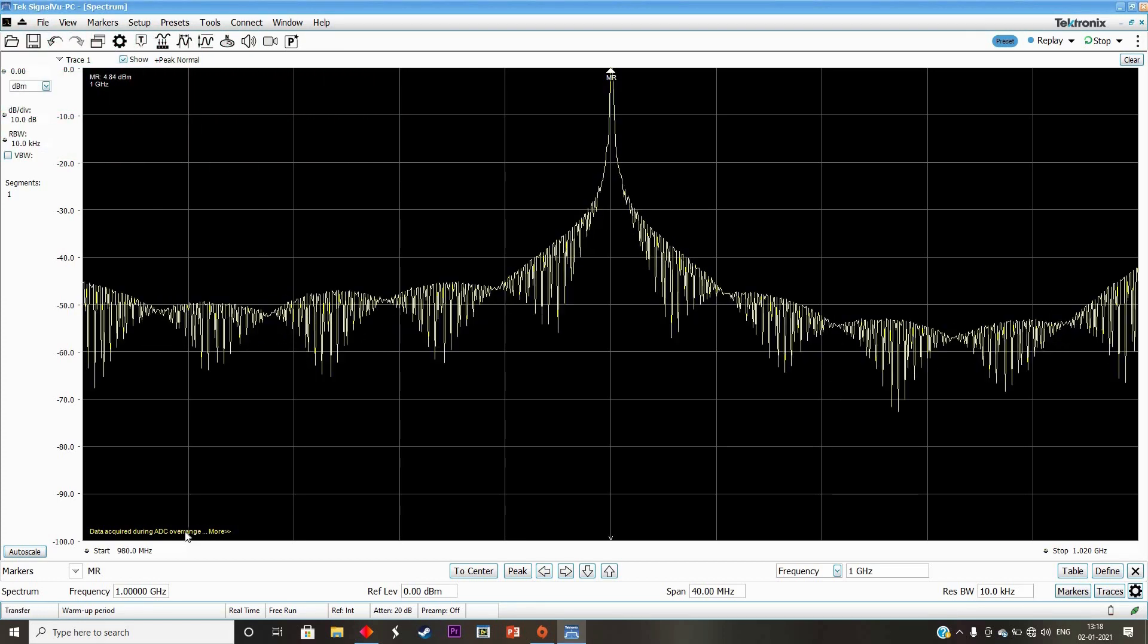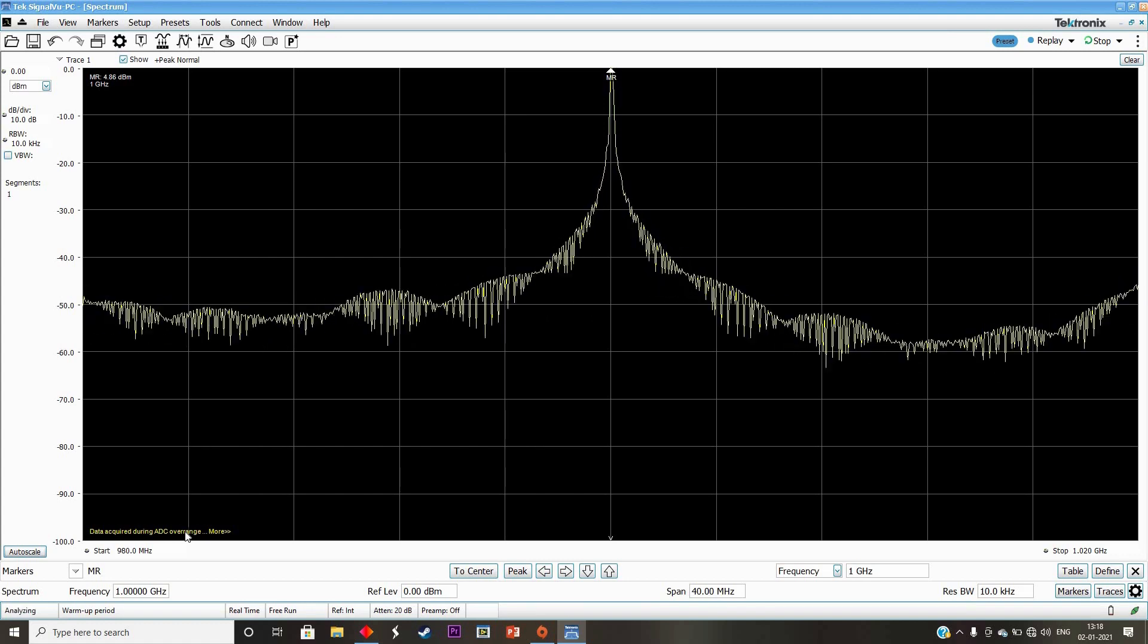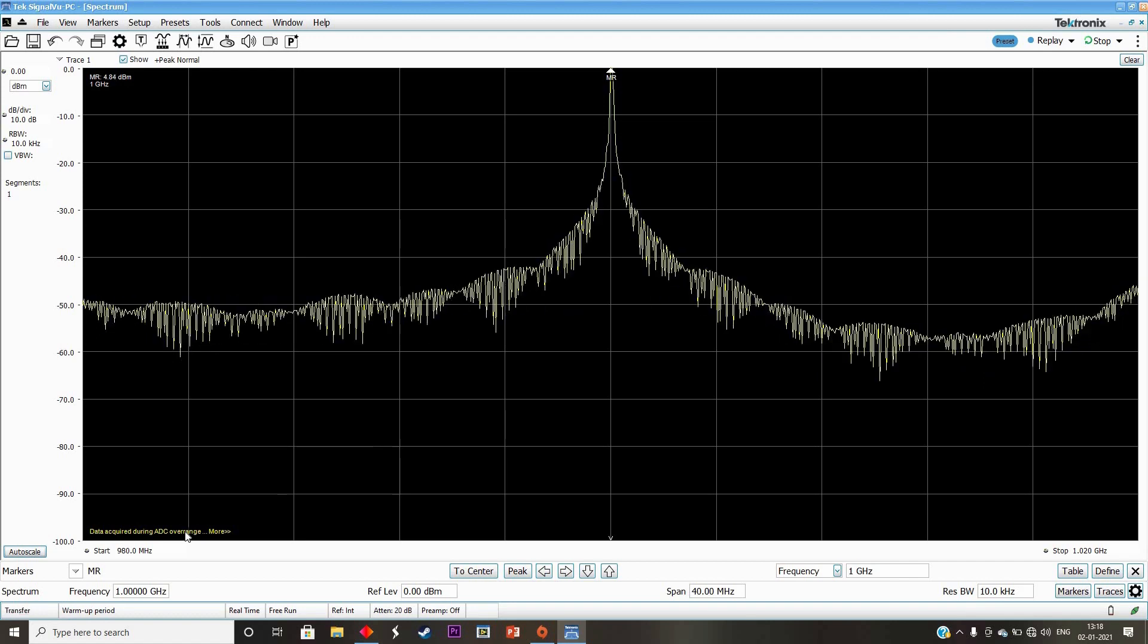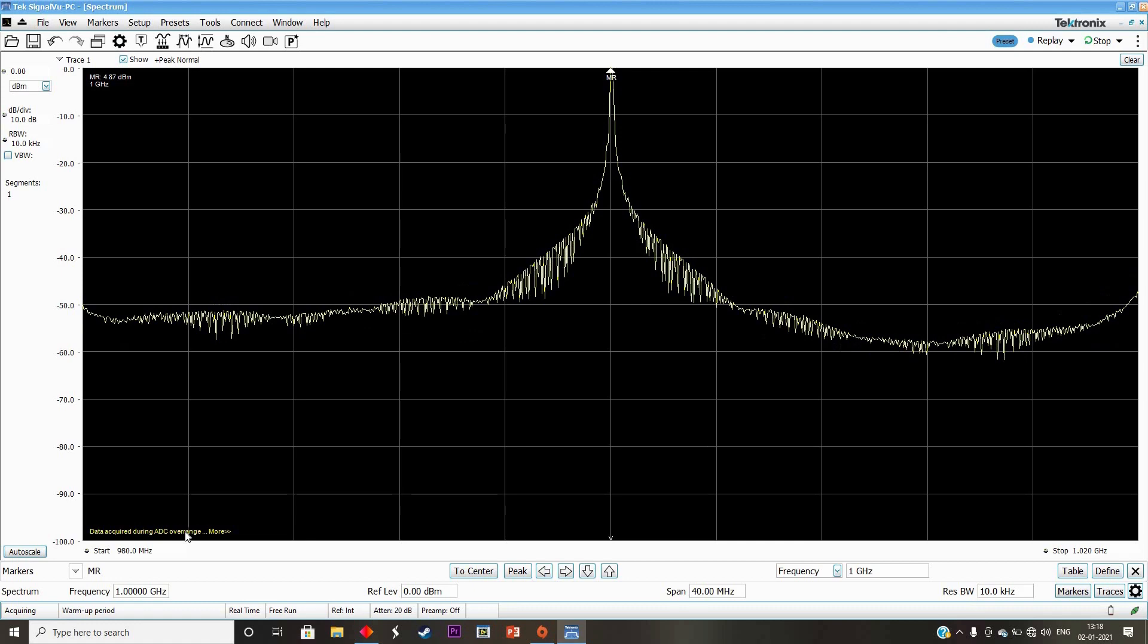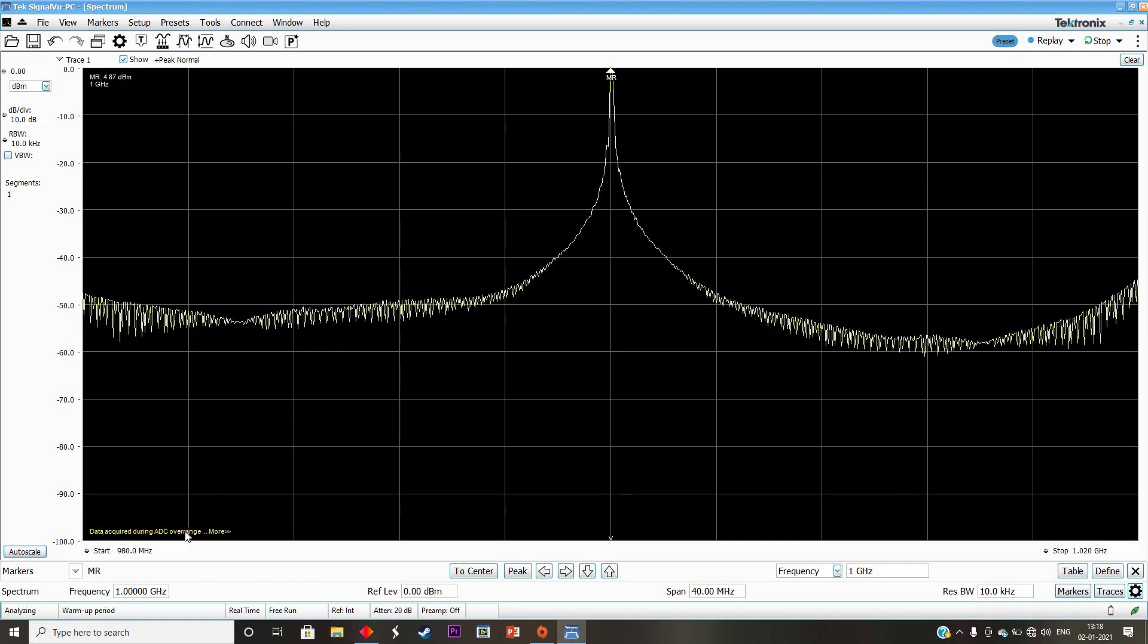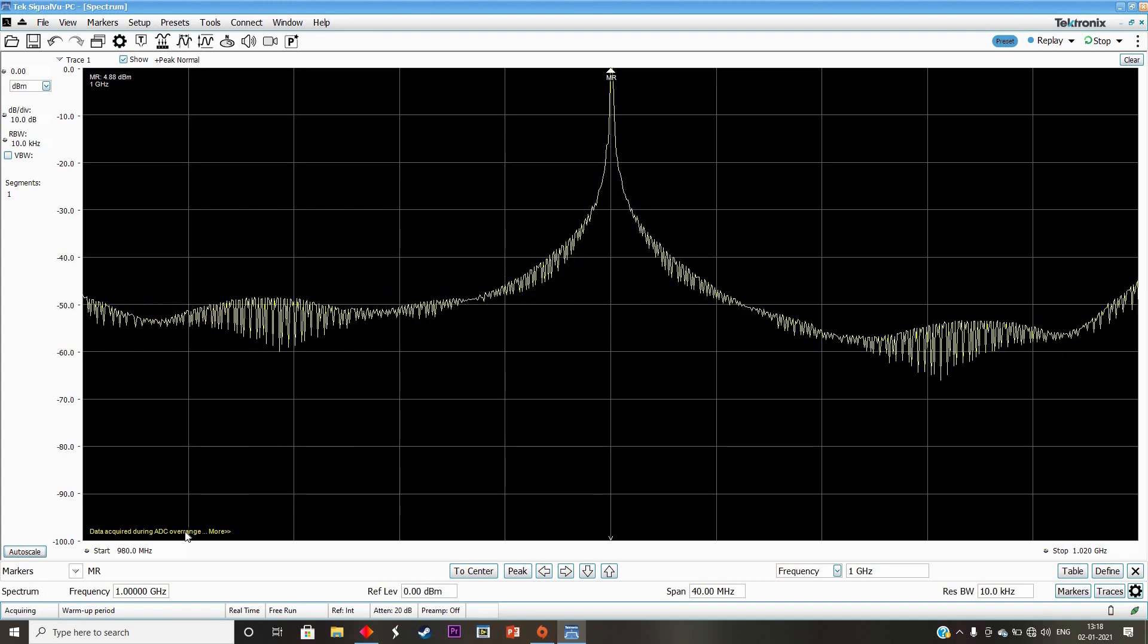Here is an example where ADC is clipping the input signal and SignalVu is throwing up a warning mentioning ADC over range. Let us see the settings to control it. One easy way is using reference level—reference level meaning the reference level for the signal analyzer.